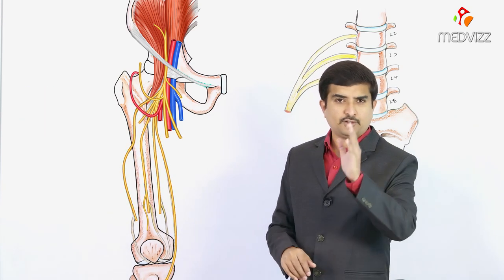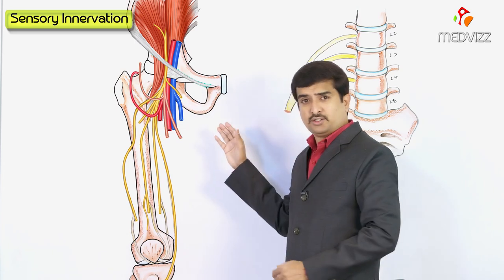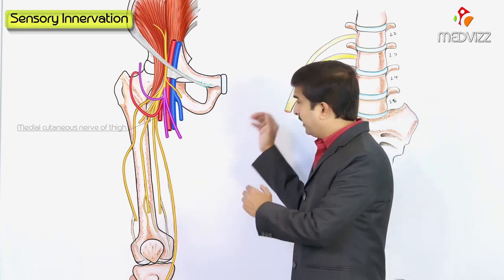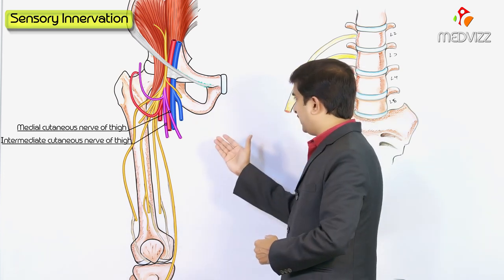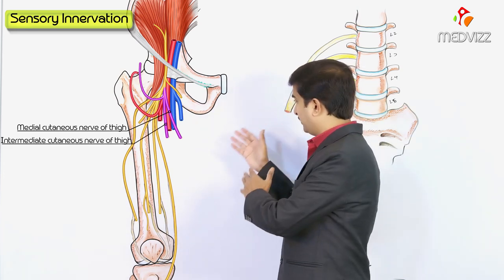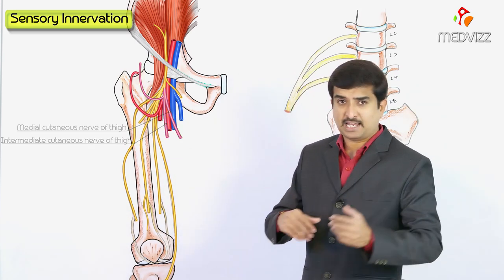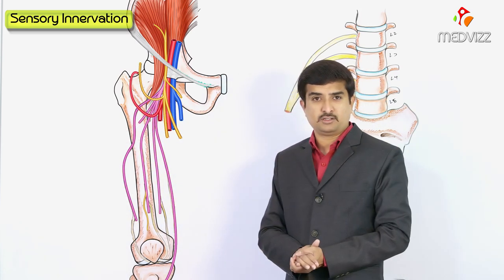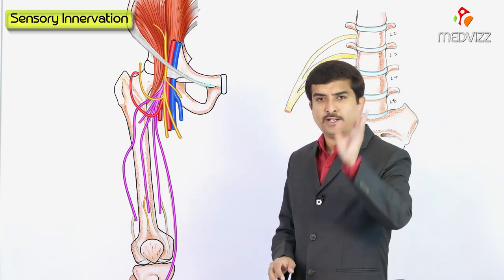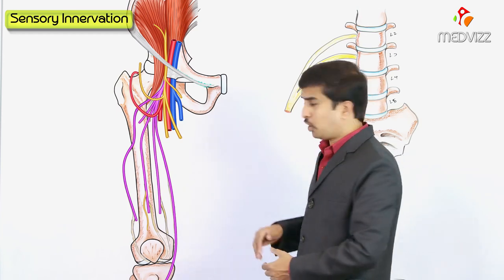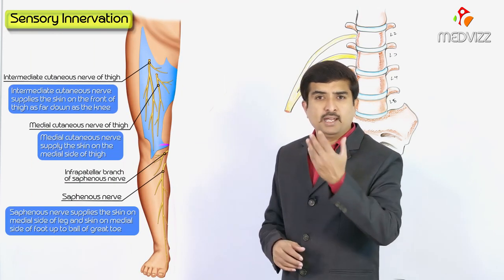For sensory innervation, the anterior division gives off the medial cutaneous nerve of the thigh and the intermediate cutaneous nerve of the thigh. The posterior division gives off the saphenous nerve, which supplies the skin on the medial side of the leg and foot up to the ball of the great toe.